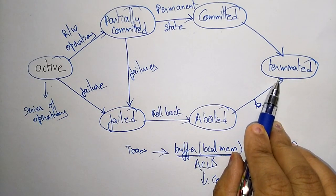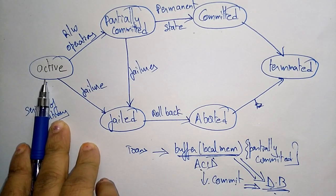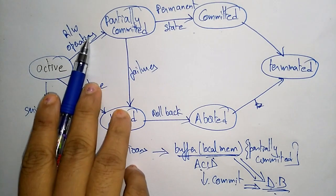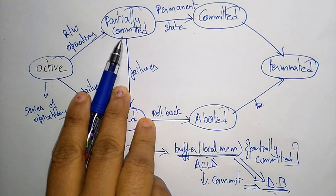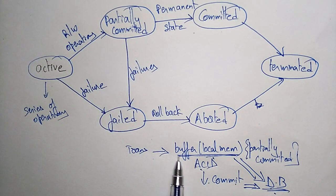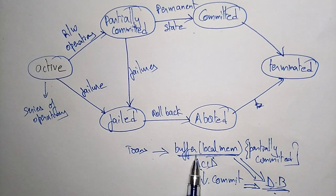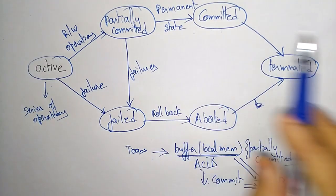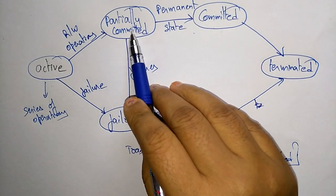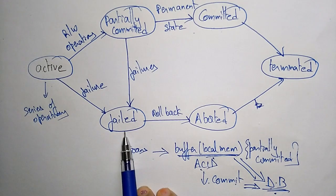After the committed state, the values will be stored in the database and then the program will be terminated. So first the transaction starts, goes through a series of operations, read/write operations move it into the partially committed state, all values are stored in local buffer, and after the commit operation those values are stored in the main database. Before partial committed, the program may also get into the failed state.